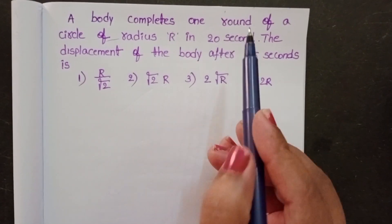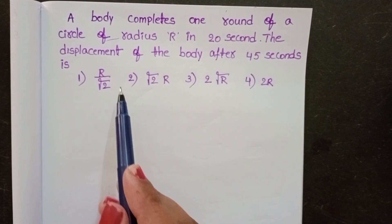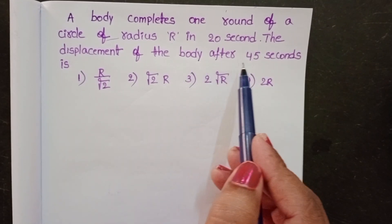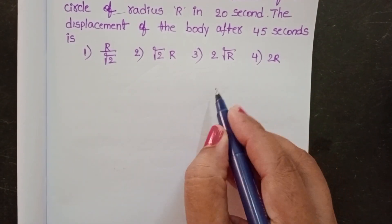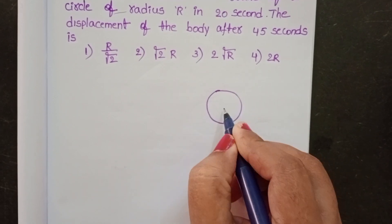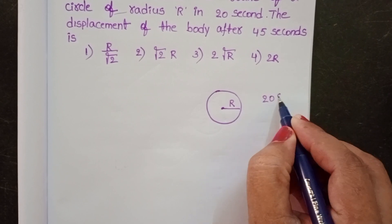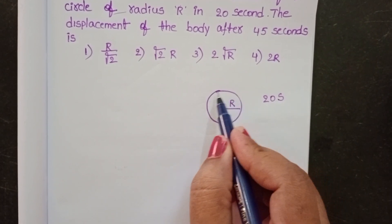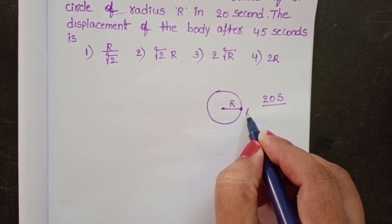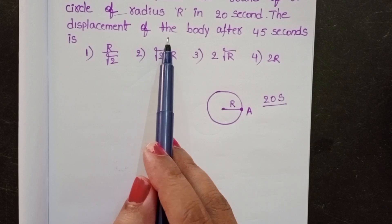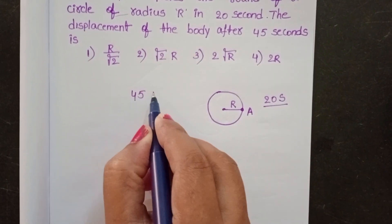A body completes one round of a circle of radius R in 20 seconds. The displacement of the body after 45 seconds is to be found. The radius of the circle is R, and it takes 20 seconds to complete one revolution. Let the initial point be A. Total time given is 45 seconds.